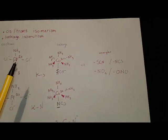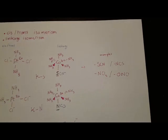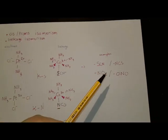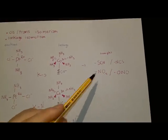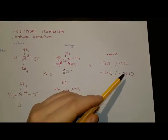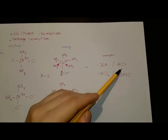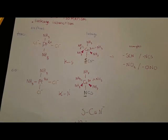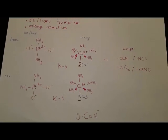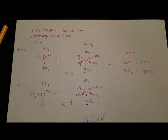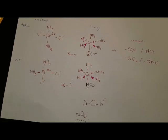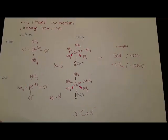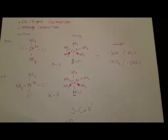We have this type of linkage isomerism with thiocyanates and also nitrite ligands. We have the nitro ligand and the nitrito ligand, the thiocyanato and the isothiocyanato ligand. So it's actually quite common in transition metal chemistry to have this type of isomerism. I think it's one of my favorite isomerisms because it's just really specific to coordination chemistry.